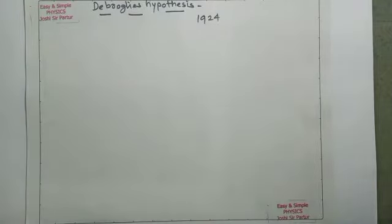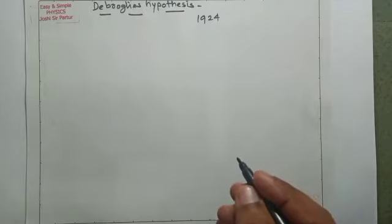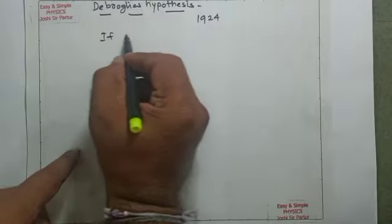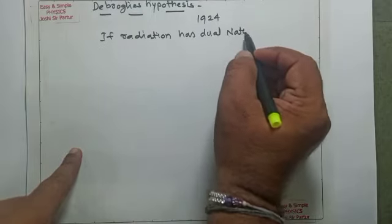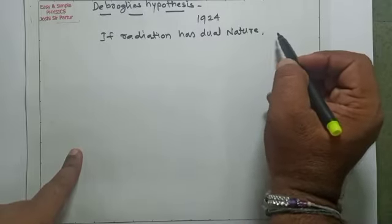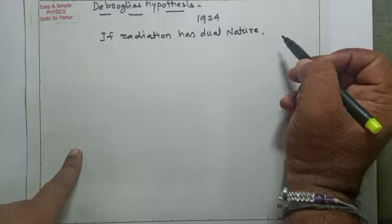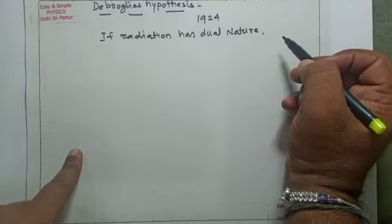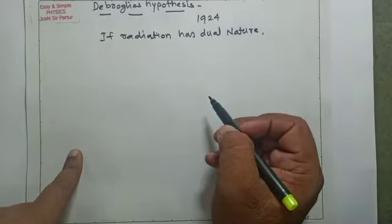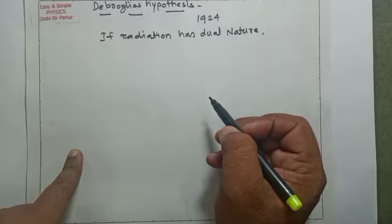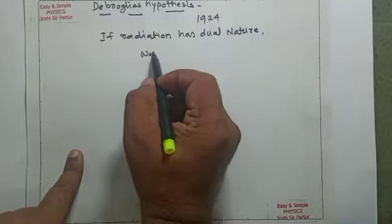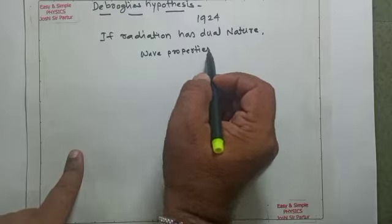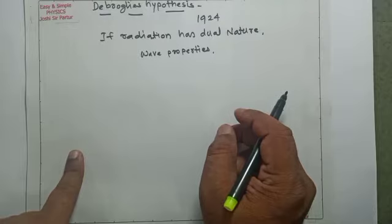Dual nature means particle nature as well as wave nature — sometimes wave nature dominates and sometimes particle nature dominates. So matter may also possess dual nature. Normally we talk about matter as composed of particles, but there are situations where matter seems to show wave properties.